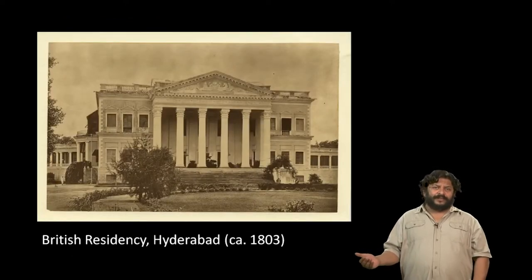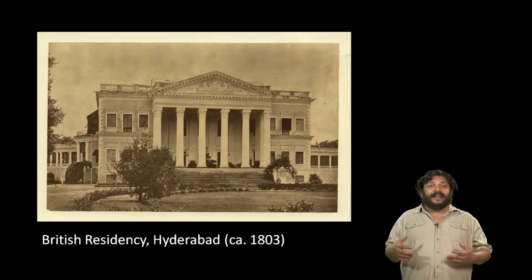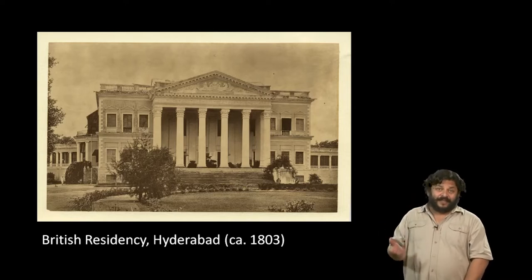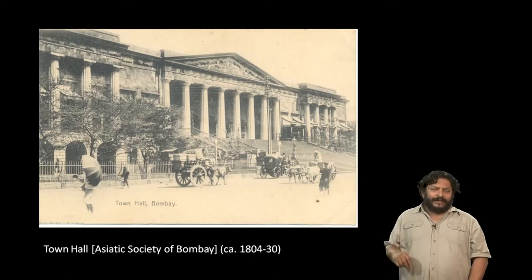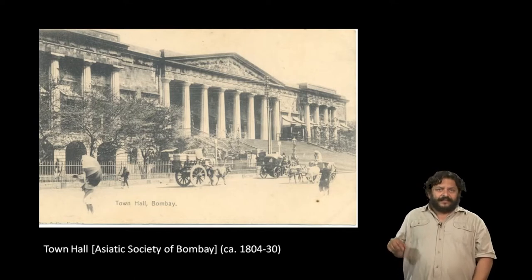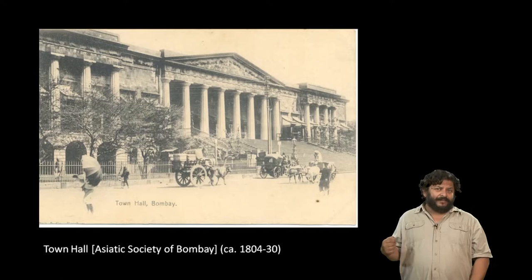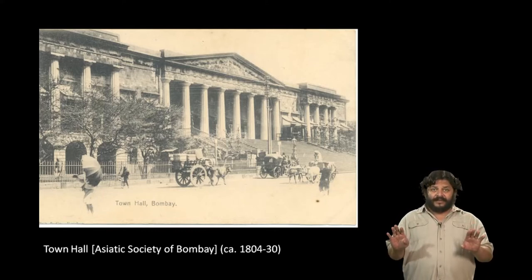It was not just in the presidency towns of Calcutta, Bombay and Madras that you find neoclassical buildings, but also in places where the British had a significant presence such as the Residency in Hyderabad. The front of this building was completely in a neoclassical mode — a two-storey building — with a single double-storied porch supported on six columns with a pediment on top, while the rear end was more Indian. The Town Hall in Bombay at what is called Horniman Circle, built in the 1803–1804 period, is built in the neoclassical style with the characteristic facade of columns and a pediment.